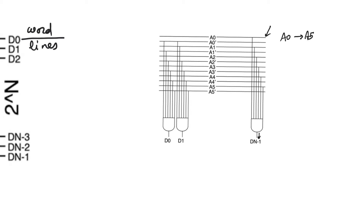So we have 12 horizontal lines: A0, A0-bar, A1, A1-bar, and so on up to A5 and A5-bar. Each AND gate accepts a unique combination of true and complement forms — either A0 or A0-bar, either A1 or A1-bar — covering all six input bits. D0, for example, is true for A0-bar, A1-bar, A2-bar, A3-bar, A4-bar, A5-bar. D1 is all complement forms except A5 is in true form. This guarantees each output is true for a unique combination and all other outputs are disabled.